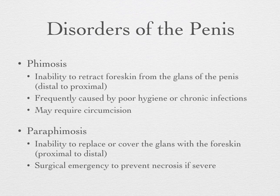Other disorders of the penis: phimosis and paraphimosis. With phimosis, the foreskin can't be retracted from the glans of the penis — from distal to proximal. A lot of times it's related to a chronic history of infections underneath the foreskin, leading to scar tissue development. If the patient has a lot of scar tissue buildup or chronic infection, they may require a circumcision.